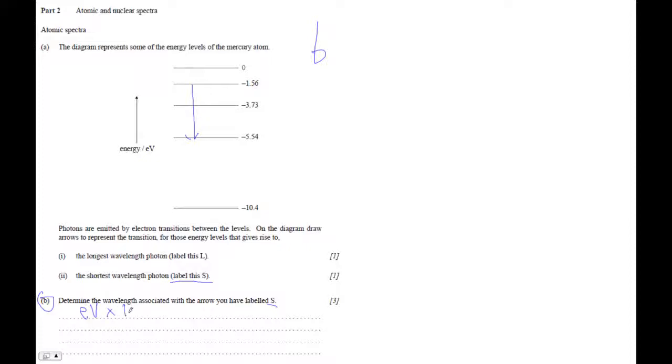Then multiply by 1.602 times 10 to the minus 19th, and you'll have joules. And then you can use, on page 8, lambda is hc over e. But this e has to be in joules.